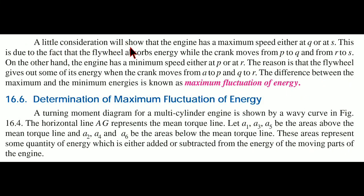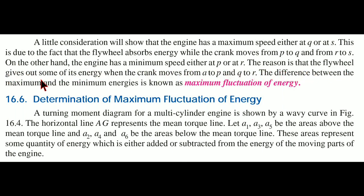A little consideration will show that the engine has a maximum speed either at Q or at S. This is due to the fact that the flywheel absorbs energy while the crank moves from P to Q and from R to S. On the other hand, the engine has a minimum speed either at P or at R. The reason is that the flywheel gives out some of its energy when the crank moves from A to P and Q to R.